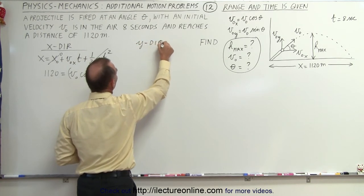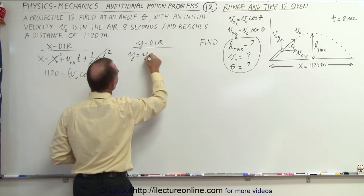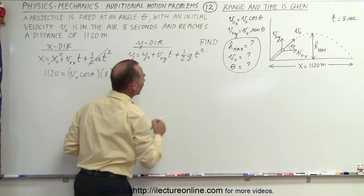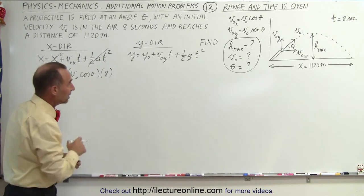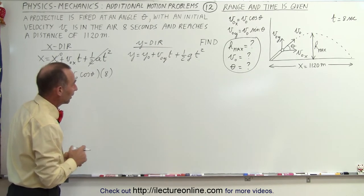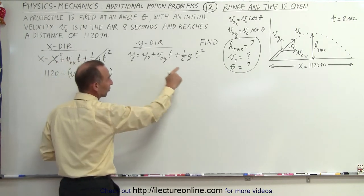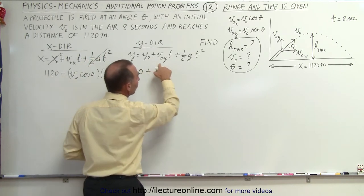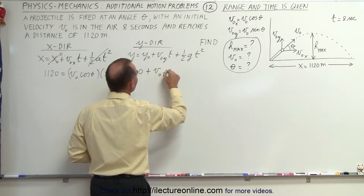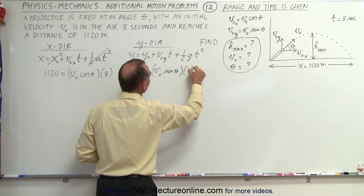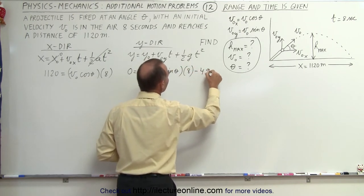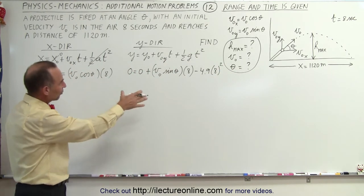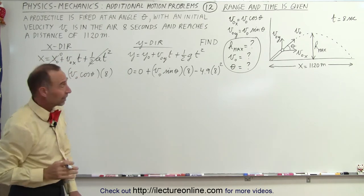Let's do the same now for the y direction. In the y direction, we use the similar equation, y equals y sub-naught plus v sub-naught in the y direction times time plus one-half g t squared, because the acceleration due to gravity is the acceleration in the y direction. Again, plugging in what we know, we have the initial and final height equal to zero. So we have zero equals zero plus v initial times the sine of theta multiplied times eight, and then we have minus 4.9 times eight squared. Notice on that equation, we can actually divide everything by eight.